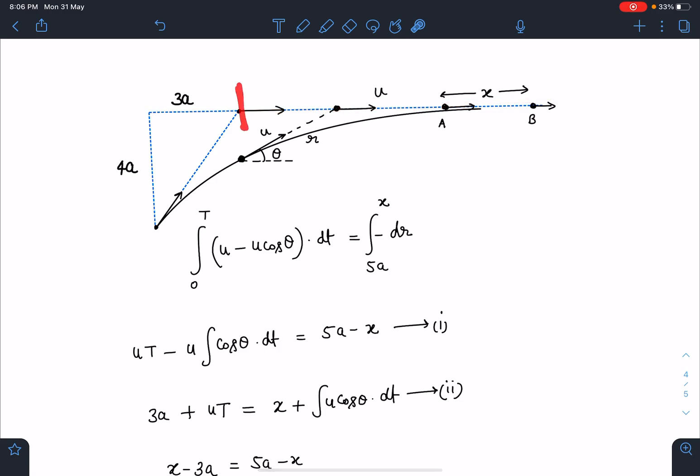What we can do is we can just equate the displacement along this line. This particle B, it is traveling a distance of u*t. After a large time when the distance becomes constant, this distance is going to be uT plus 3a. This is the total displacement along x-axis for particle A, which is integral(u*cos(theta)*dt).